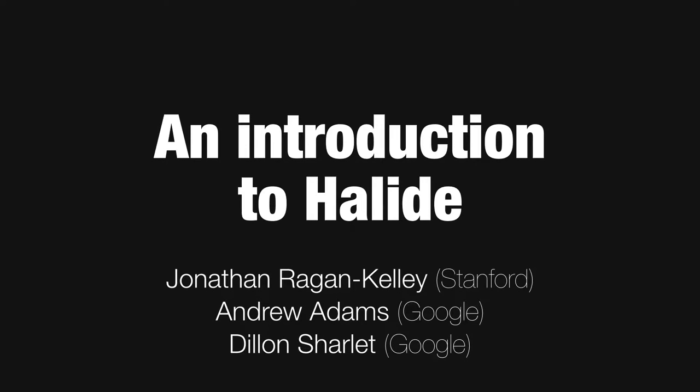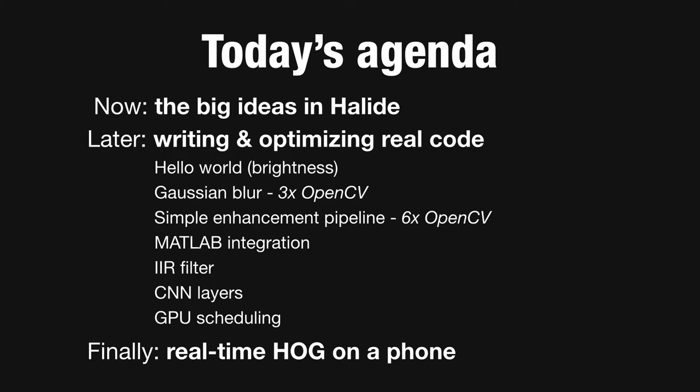This is a tutorial on Halide, which is a programming language designed to make it much easier to write fast image processing code. These slides are meant to accompany and be interleaved with a set of interactive examples of writing and working with real Halide code. So in the live version of this tutorial we alternate between discussing the core ideas in these slides and seeing them applied in real examples.